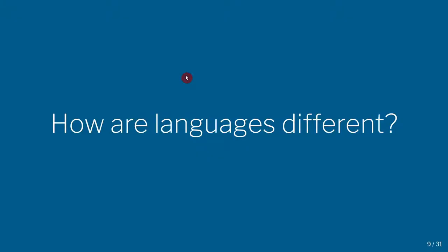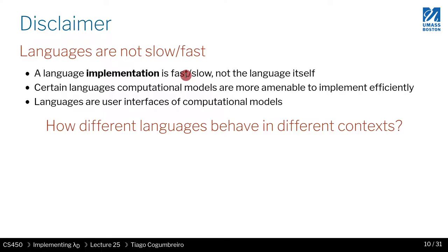So how are programming languages different? First of all, I want to clarify that usually people think about the difference between programming languages in terms of runtime speed — saying a language is fast or slow. But what people really mean is: the implementation of that language is faster or slower. It's not the language itself. C itself is not fast or slow; Python is not fast or slow. It's really the implementations of each of these languages that people are referring to. It is true, however, that certain computational models and therefore certain languages are more amenable to implement efficiently.